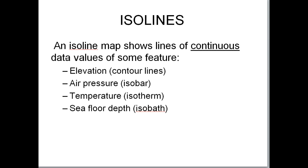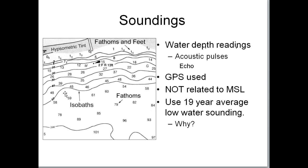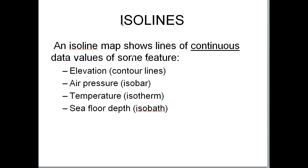Another way elevation is shown on a map is through isolines. An isoline shows lines of continuous values of some kind of data. You can have elevation isolines, which are contour lines. Air pressure isolines are isobars, temperature isolines are isotherms, and lines of ocean depth would be isobaths.